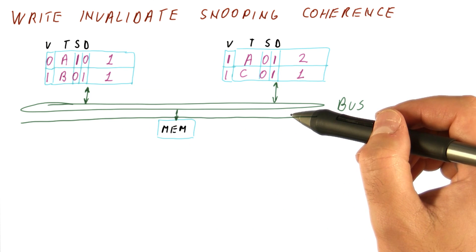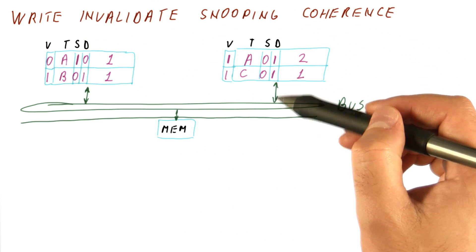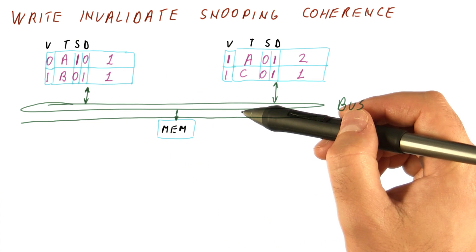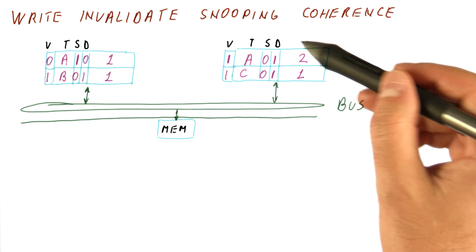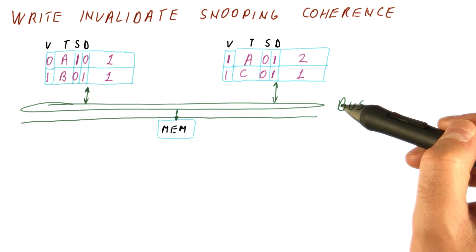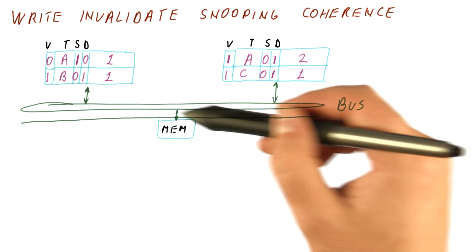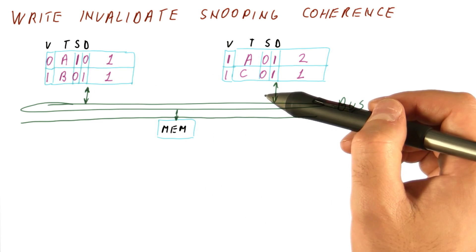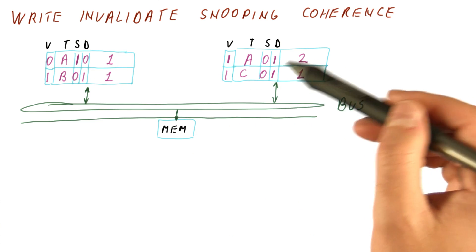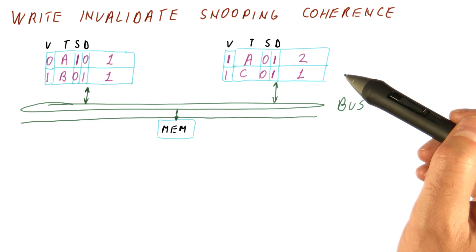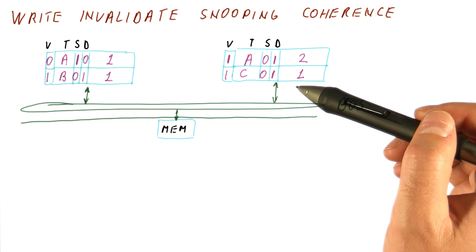The third coherence property is still ensured by snooping in a write invalidate protocol. Snooping on the bus ensures that any writes involving sharing are ordered by the sequence in which they go to the bus. A write here will invalidate everything; a subsequent write must put a request on the bus because it's a miss, obtain the copy, and thus everybody knows the ordering. At any given time, only the last version survives in caches because a write invalidates all other copies.